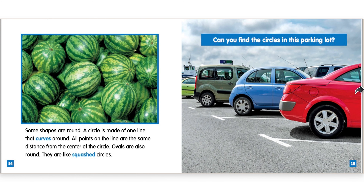Some shapes are round. A circle is made of one line that curves around. All points on the line are the same distance from the center of the circle. Ovals are also round. They are like squashed circles. Can you find the circles in this parking lot?